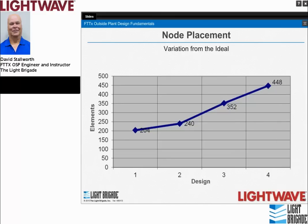Looking at where a node would be placed in the ideal area, there are a number of different positions it could go. You would plot each point and develop costs and elements for each. Once you find the most economical location for nodes based on the ideal planning area, the chart tells you something very significant: the more you vary from that ideal location, the higher the costs become. In the real world you may not always get the ideal spot, but understanding that the further you move away, the higher your cost — that plays into the mix.